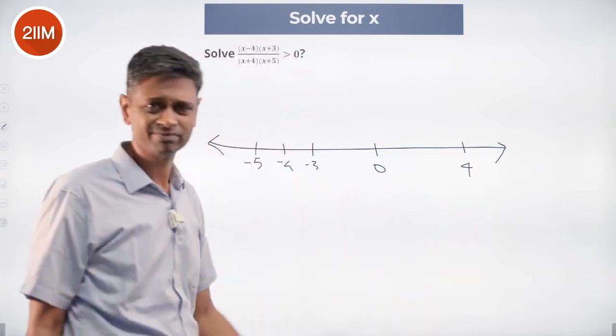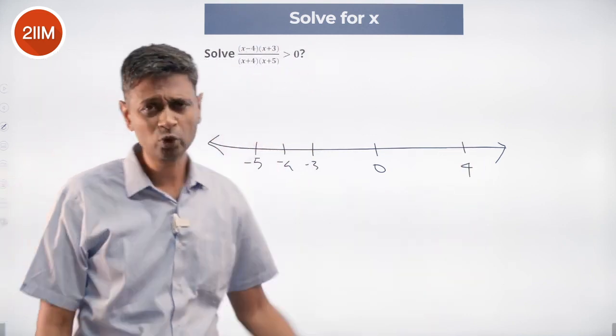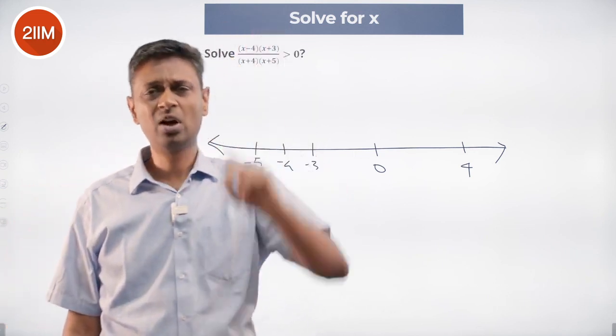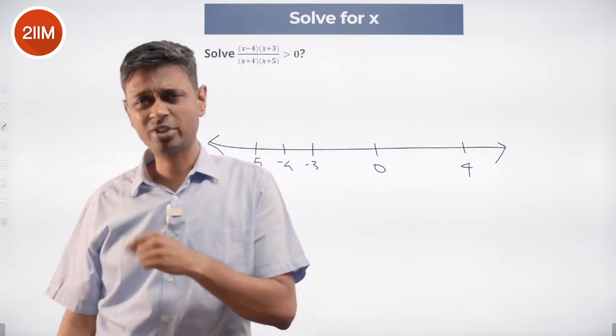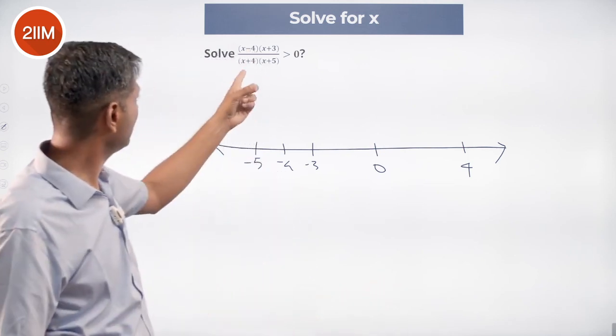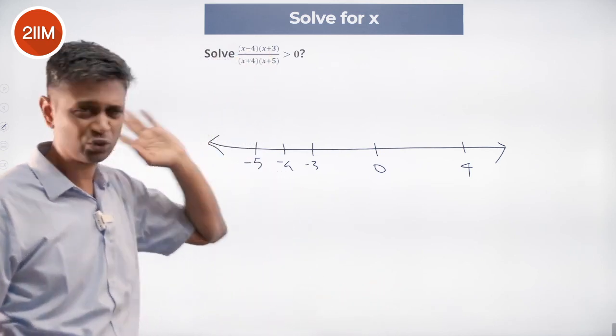So I am comparing with zero. I am comparing only the sign. My value is 0.1 or 3 billion, it does not matter. If it is positive, it is positive; negative, negative. And so my turning points are minus 4, minus 5, minus 3, and plus 4.